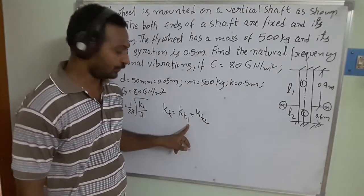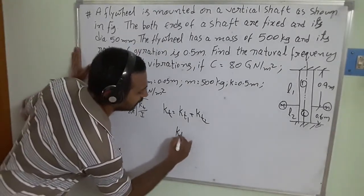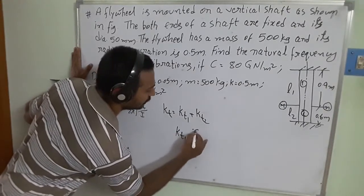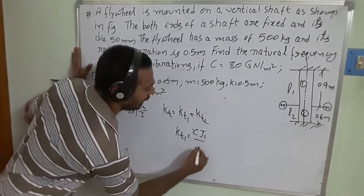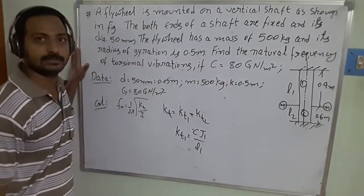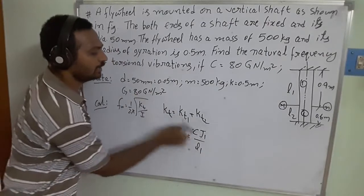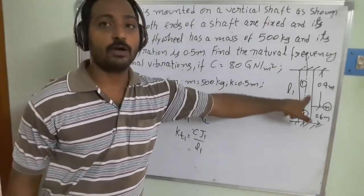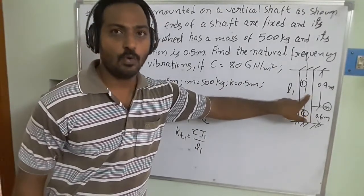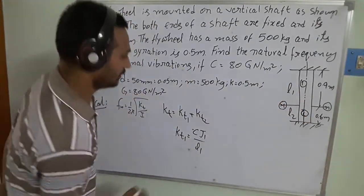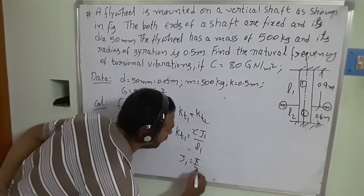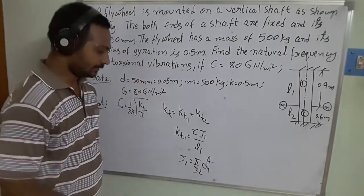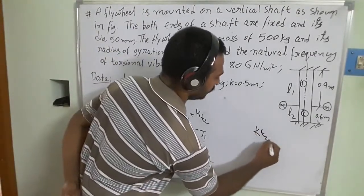The formula for kt1 is: kt1 = C × J1 / l1, where C = 80 GPa and J1 is the polar moment of inertia for partition 1. J1 = (π/32) × d1 to the power of 4. Similarly, kt2 = C × J2 / l2.